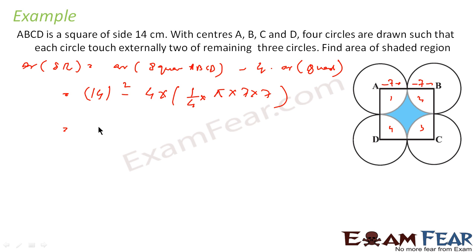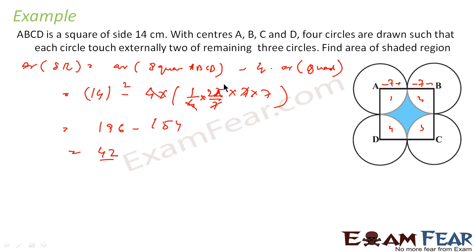Let's solve it. 14 squared is 196, minus — this gets cancelled — π is 22/7. 22 into 7 is 154. Solving this you get 42. Since we are talking about area, the unit is centimeter square. This is a very simple problem: from the square you cut four circles and you get the shaded region.